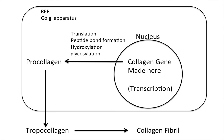Another common question deals with the processing of collagen — specifically what processing occurs intracellularly versus extracellularly. Collagen is made as a gene in the nucleus, then shipped outside the nucleus inside the cell as pro-collagen. Those little end units are snipped off, and then it's shipped outside the cell as tropocollagen. Inside the cell we're going to have things like...